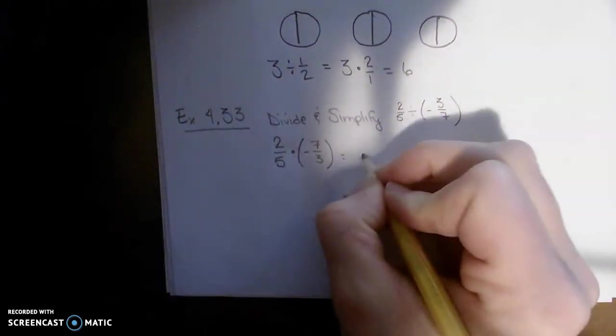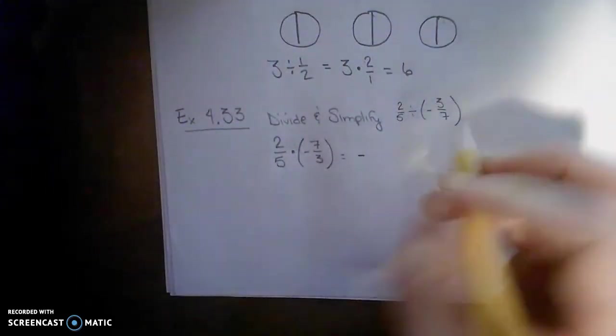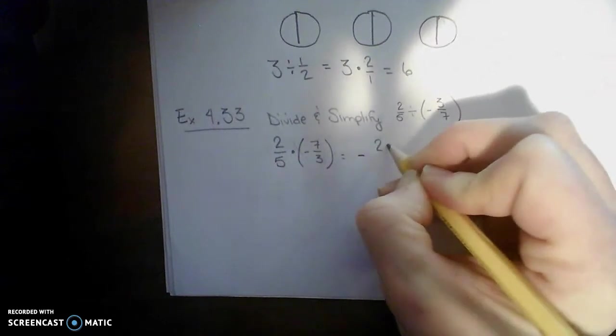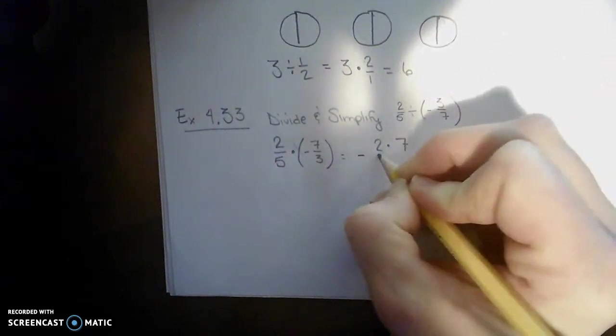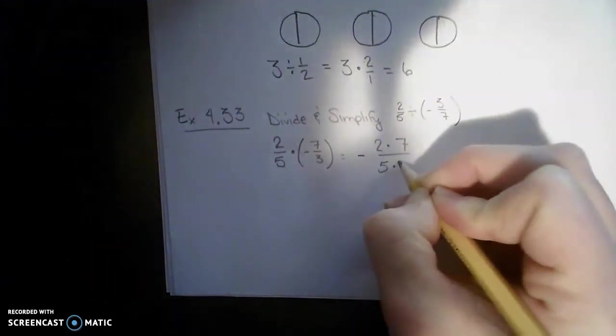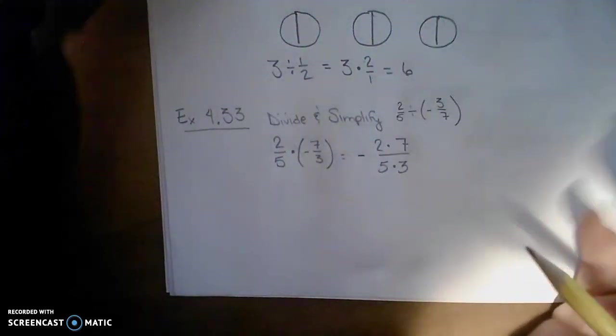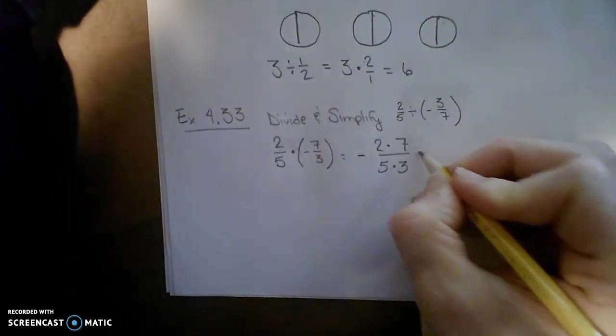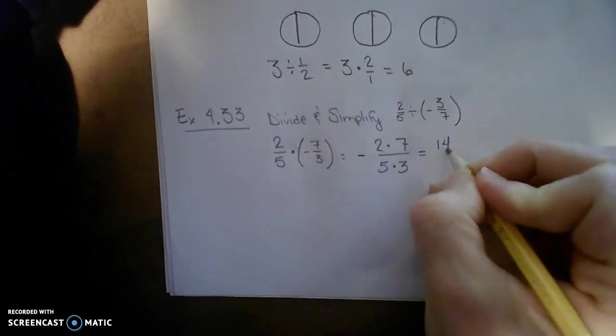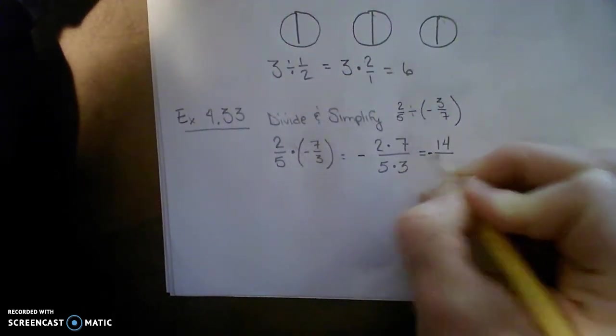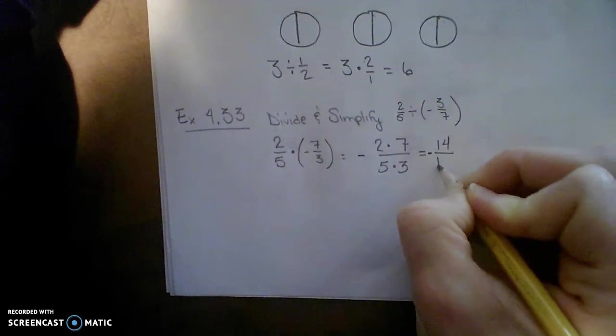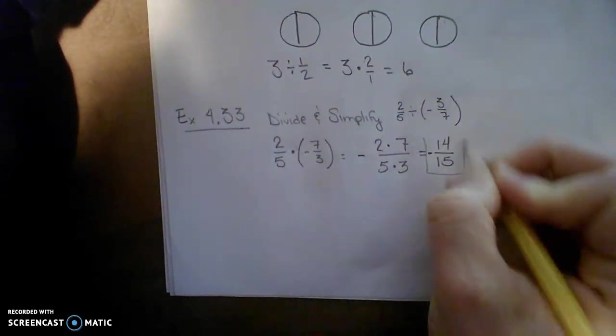Well, positive times negative is going to be negative. Let me put that on the outside. And to multiply fractions, multiply numerators together. 2 times 7 over 5 times 3. Do you see any common factors that can be divided out? I do not. So I'll go ahead and multiply. Negative 14 over 15. And there we have it.